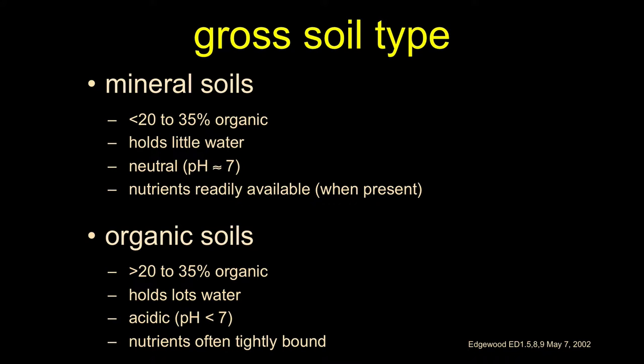Pulling this all together: mineral soils are relatively less organic, hold little water, have neutral pH, and nutrients are readily available but leave quickly. Organic soils are greedy — they hold water, hold nutrients, and release them slowly. From the perspective of plants, that's usually better because we don't want everything released in one five-minute rain event. We prefer it dribbled out over days, weeks, and months. Organic soils are better for most plants to grow, especially our wetland plants.